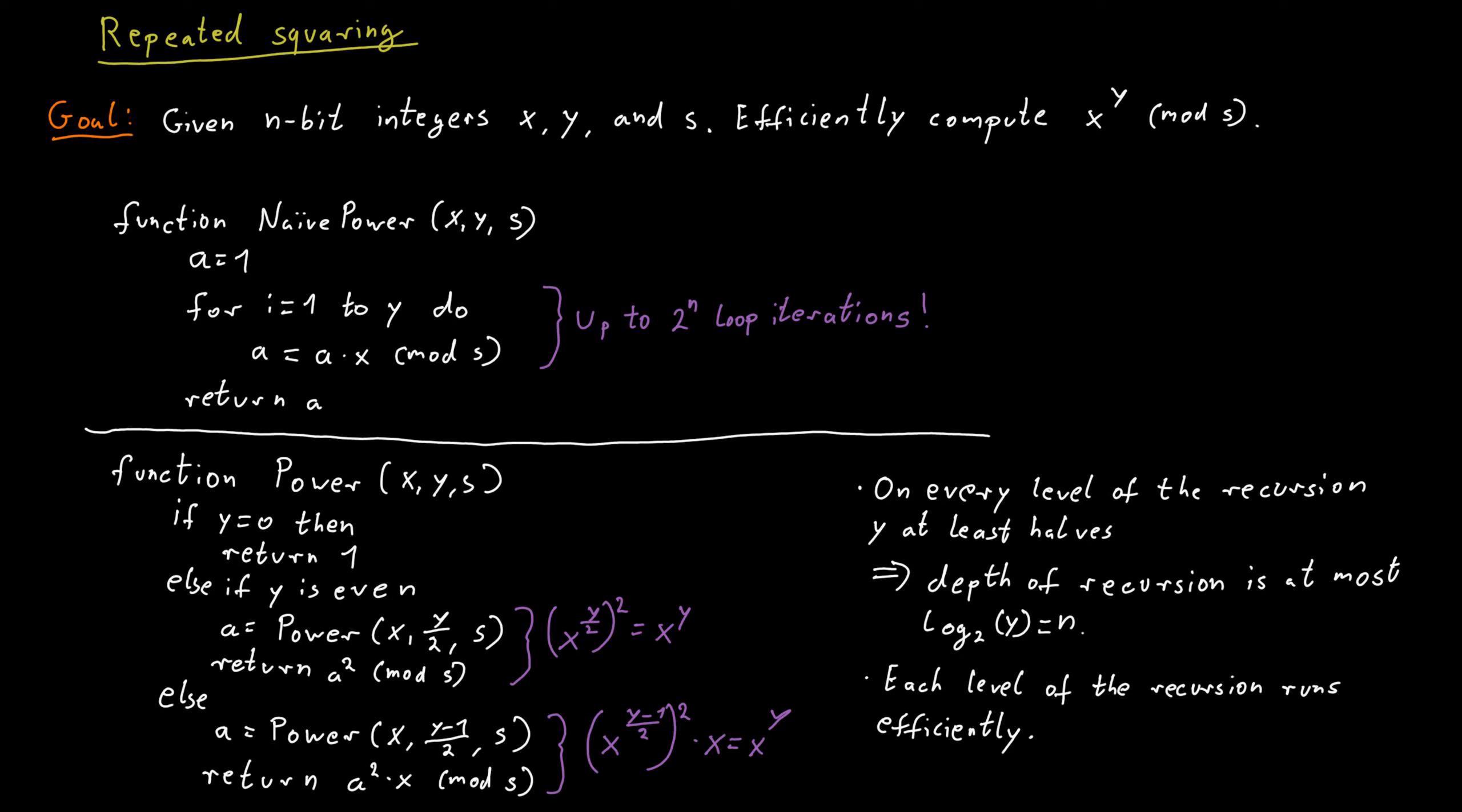So we're really only multiplying a few numbers in each step. And each of those numbers have at most n bits in them. And this is how you quickly, efficiently, in polynomial time, do a computation like x to the power y mod s.